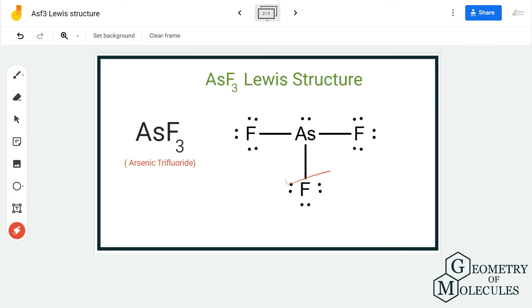in this structure. This is the Lewis structure of arsenic trifluoride, in which there are three single bonds formed and there is a lone pair of electrons on the central arsenic atom.